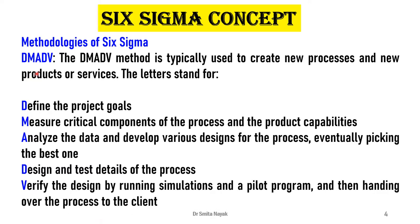The second methodology is called DMADV, which includes five phases and is typically used to create new processes, products or services. D stands for Define the project goals, which should be realistic and suit customer requirements or the business strategy. M stands for Measure critical components of the process and product capabilities, with customer requirements considered and translated into project goals. A stands for Analysis of data and developing designs for the process, picking the best one, with multiple options and alternatives presented to the customer and the best process adapted based on their requirements.